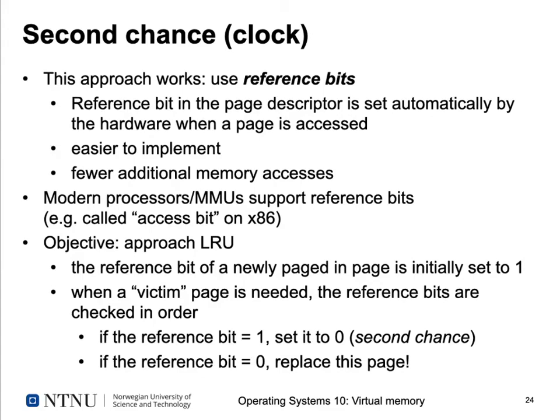A page replacement algorithm that actually works is the second chance or clock algorithm. This approach uses reference bits — a bit in the page descriptor that is set automatically by the hardware whenever the page described by the descriptor is accessed. This is much easier to implement than keeping clocks or counters for each page and uses fewer memory accesses. Modern processors and their MMU support reference bits, though they may be called differently, like the accessed bit on x86 processors.